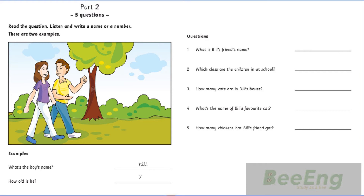1. Is this your friend with you? Yes, it is. What's her name? Her name's Kim. How do you spell that? K-I-M.